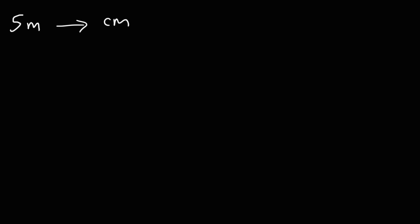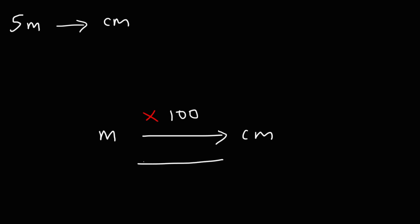First, let me give you the shortcut method. To go from meters to centimeters, what you want to do is multiply by 100. If you need to go backwards from centimeters to meters, you need to divide by 100.